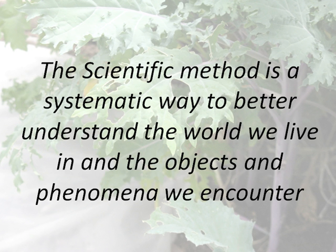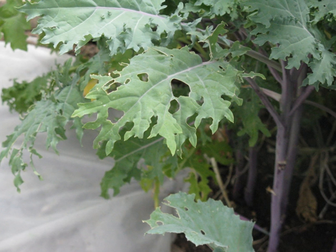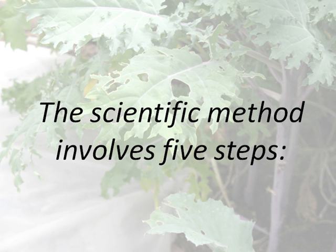The scientific method is a systematic way to better understand the world that we live in and the objects and phenomena that we might encounter. To better understand the scientific method, I will use an example based on a problem that I recently had to deal with. My beautiful kale plants were getting eaten by some unseen creature before I could harvest and enjoy them. Let's go through the five steps of the scientific method and see if we can solve this problem.